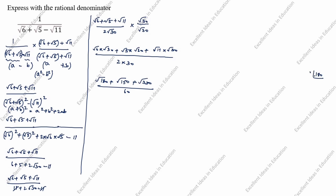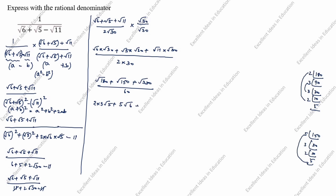Now simplify root 180 using LCM: 180 = 2 × 2 × 3 × 3 × 5, so root 180 = 6 root 5. Root 150 using LCM: 150 = 2 × 3 × 5 × 5, so root 150 = 5 root 6. So the numerator becomes 6 root 5 plus 5 root 6 plus root 330, all divided by 60.